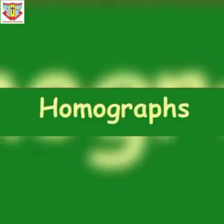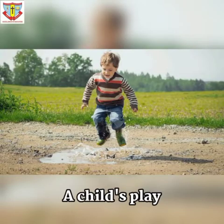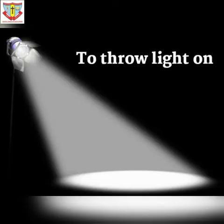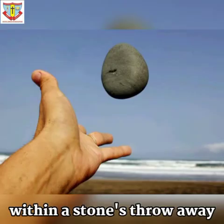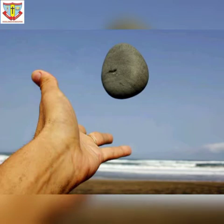Now we come to Idioms. A fixed group of words whose meaning is quite different from that of the individual words used in it is called an idiom. For example, 'a child's play' means something very easy. 'To throw light on' means to explain clearly in detail. 'Within a stone's throw away' means at a short distance. These words are used in different ways and play a very important role in English grammar.